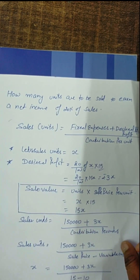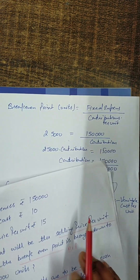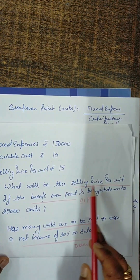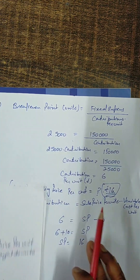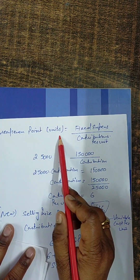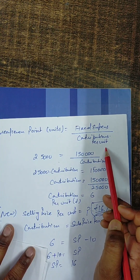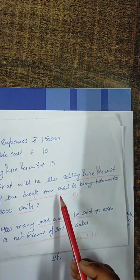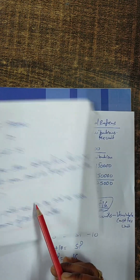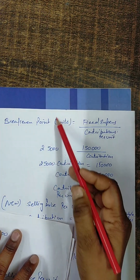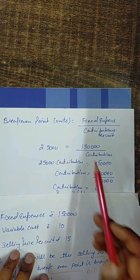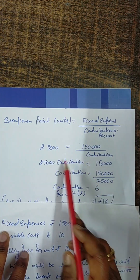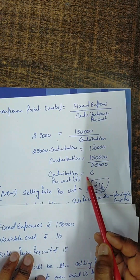Let's start with the first point — finding the selling price per unit. The break-even point is given as 25,000 units. Using the break-even formula, contribution per unit equals fixed cost divided by break-even units: ₹1,50,000 divided by 25,000 units gives us a contribution per unit of ₹6.